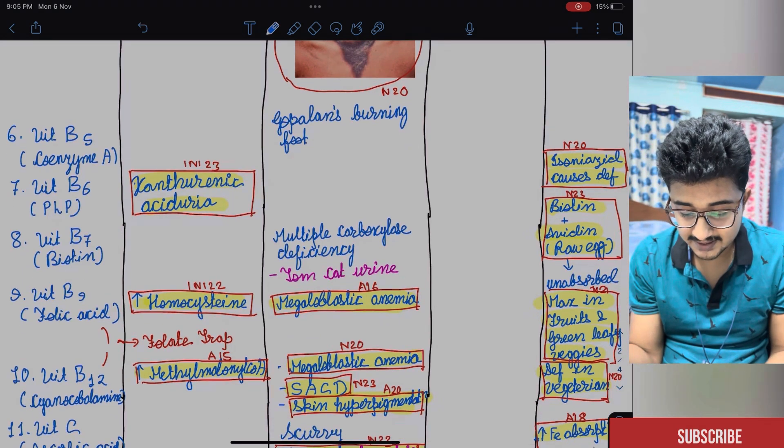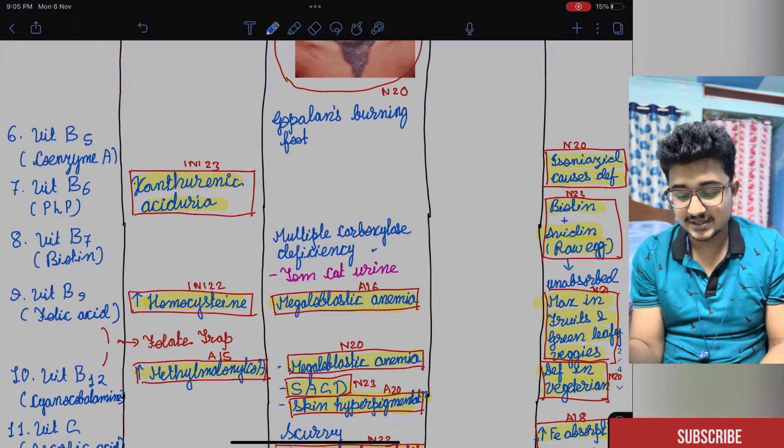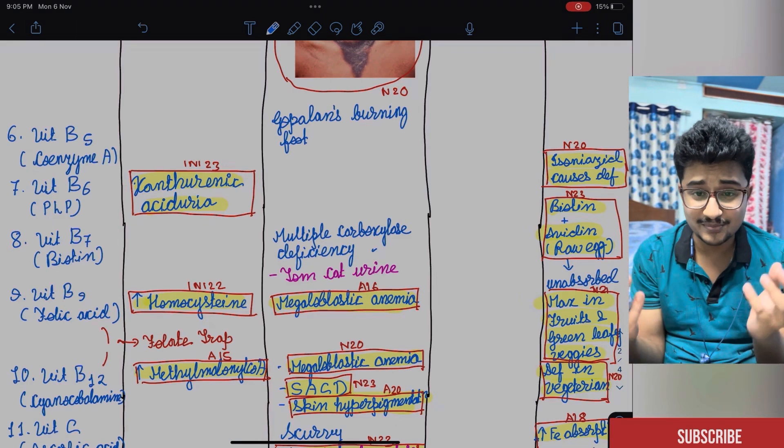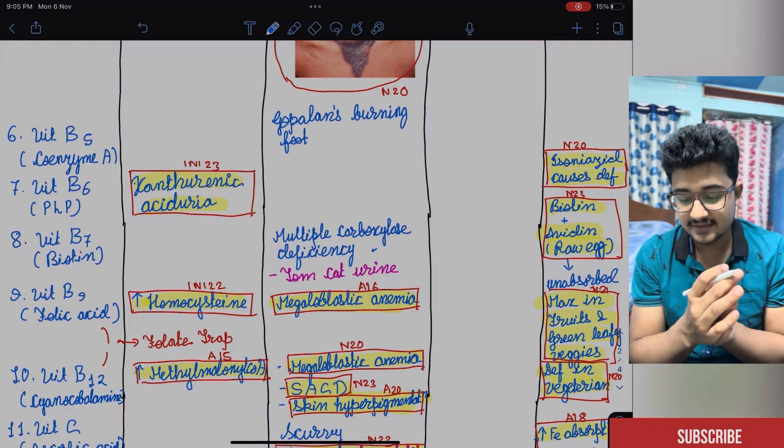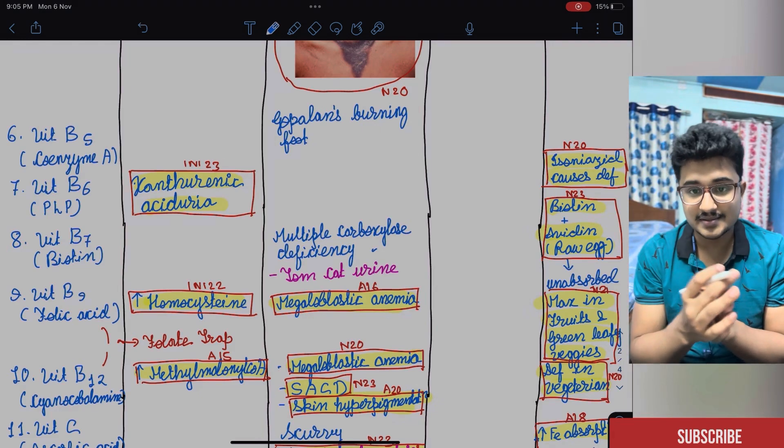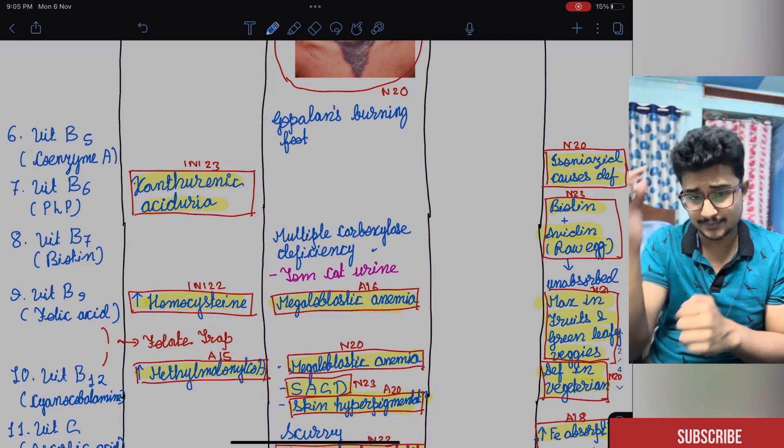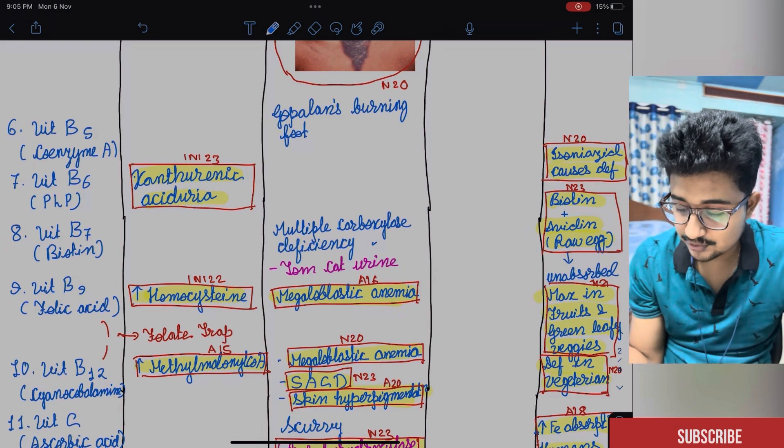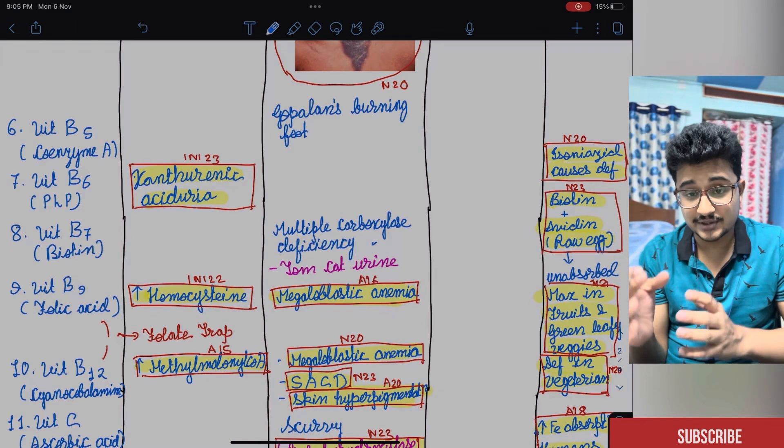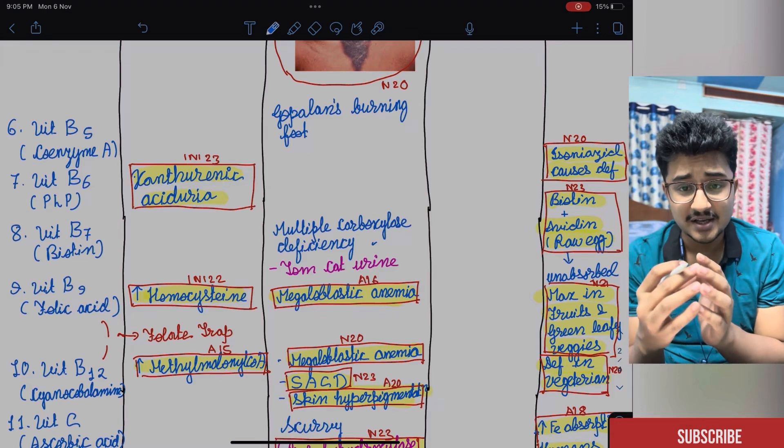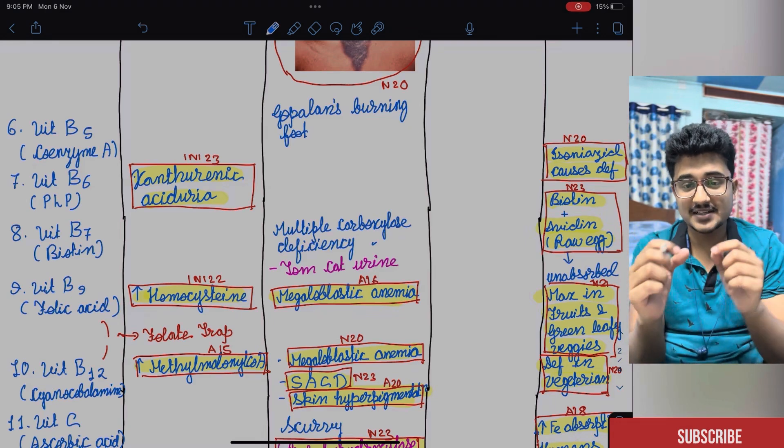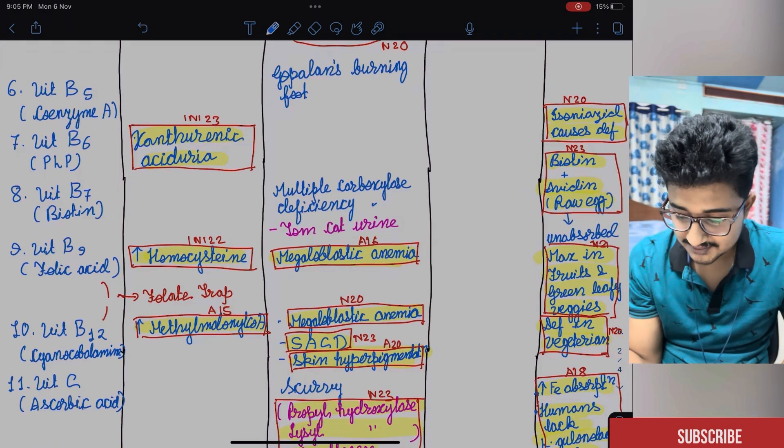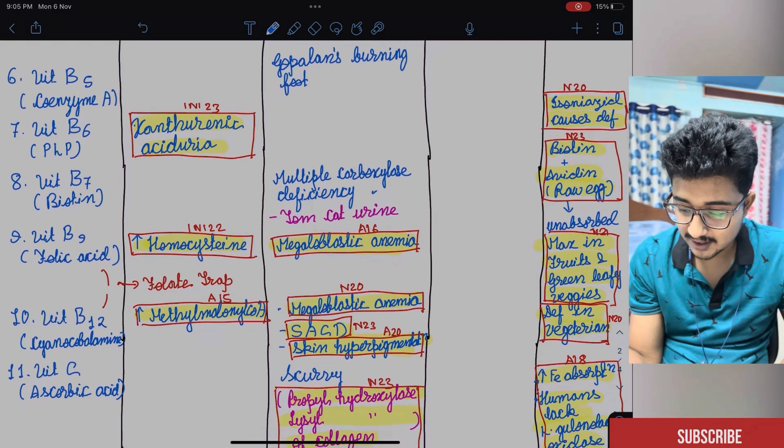After that is vitamin B7. It's multiple carboxylase deficiency causes tomcat urine. The smell is that of tomcat. And it can cause many features like CNS problem, skin problem and hair problem. Multiple carboxylase deficiency. The treatment is biotin. The biotin question that was asked this year is that biotin binds with avidin of raw egg. Therefore, you should not consume raw egg because the avidin binds to the biotin and inhibits its absorption. It becomes an unabsorbed product.